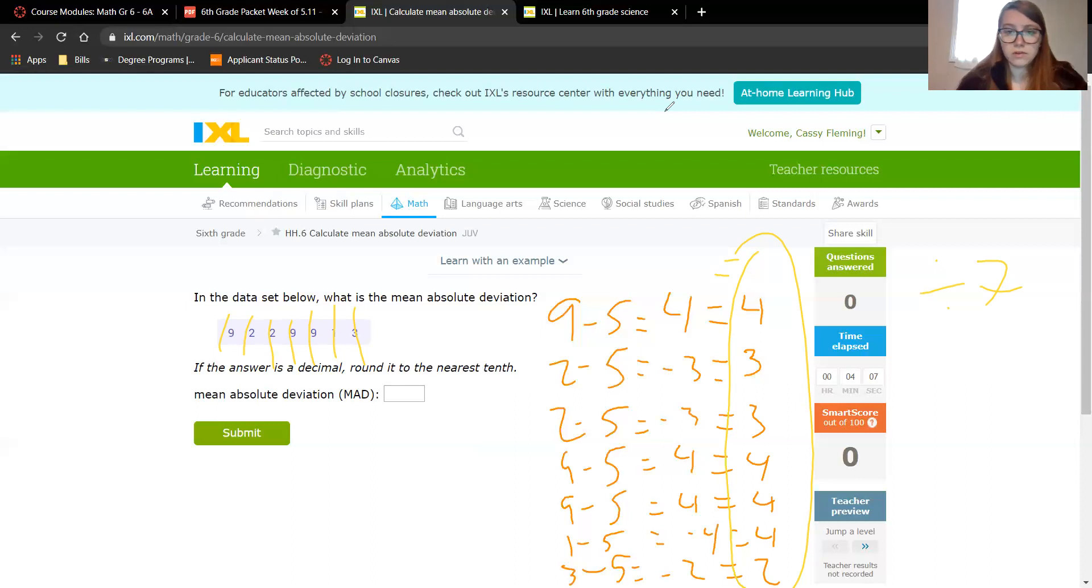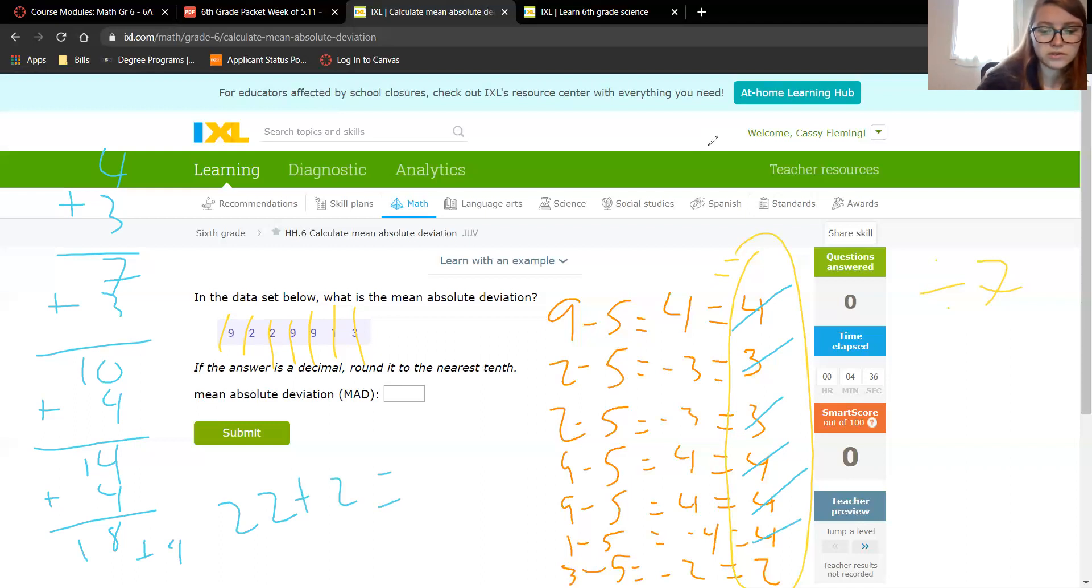So I will do that math over here. 4 plus 3 is 7, plus 3 is 10, plus 4 is 14, plus 4 is 18, plus 4 is 22, plus 2 is 24.